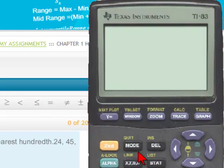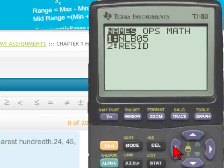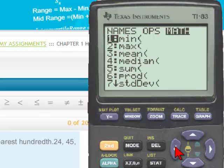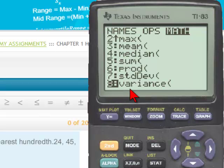And now we're going to go to the LIST button, which is over the STAT button, so we'll use the yellow second key. Go to LIST, then to the MATH menu, and at the bottom of the list, number 8, which we can't see, but we can if we scroll up, is the variance.